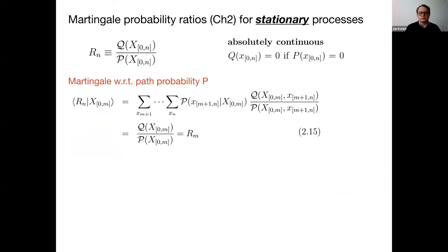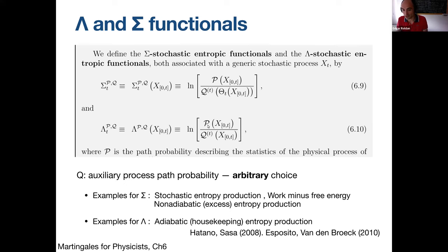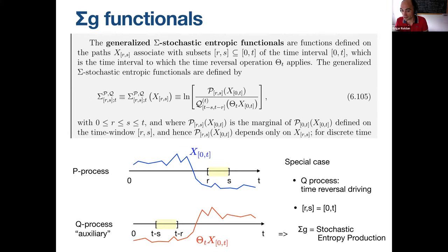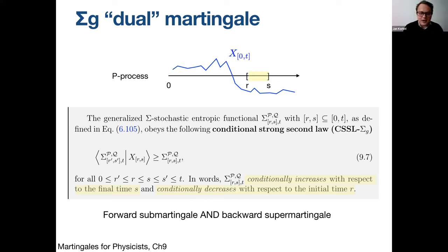Yes, Q over P is always a martingale with respect to P and does not need to be related to thermodynamics at all. The beauty for our community is choosing P and Q related to a physical process you can study in the lab. You can also do finance with P over Q — that is why Black, Scholes, and the field of quantitative finance developed. Thank you Edgar, and on to the next session.